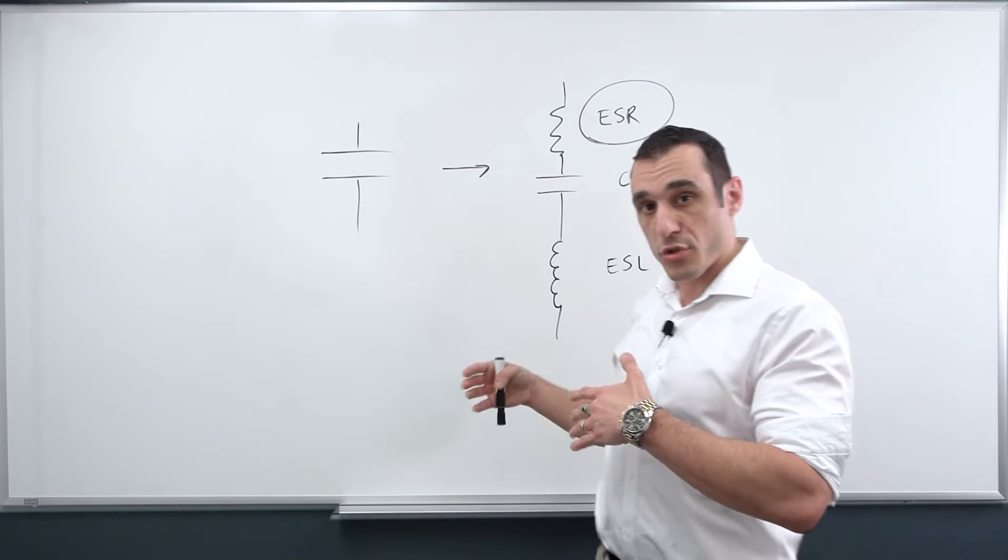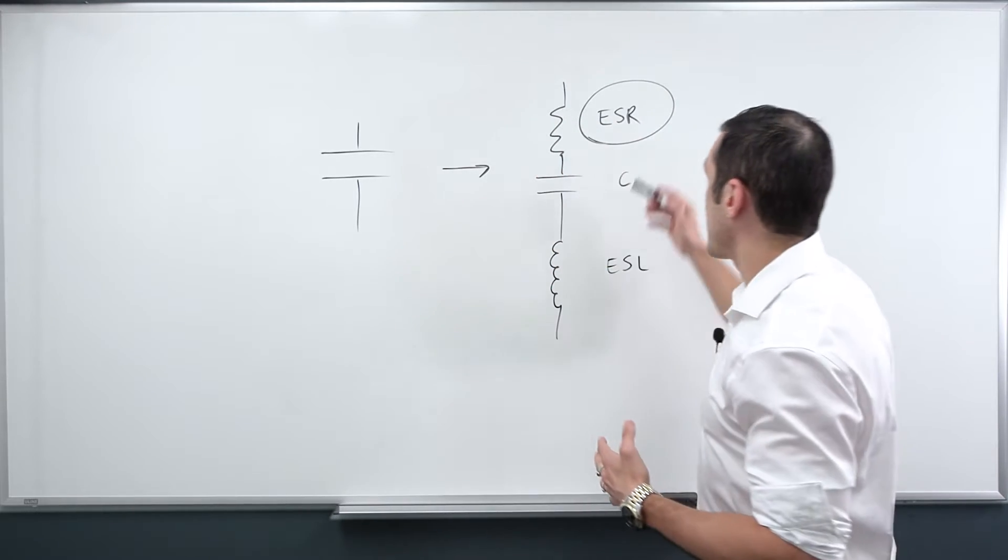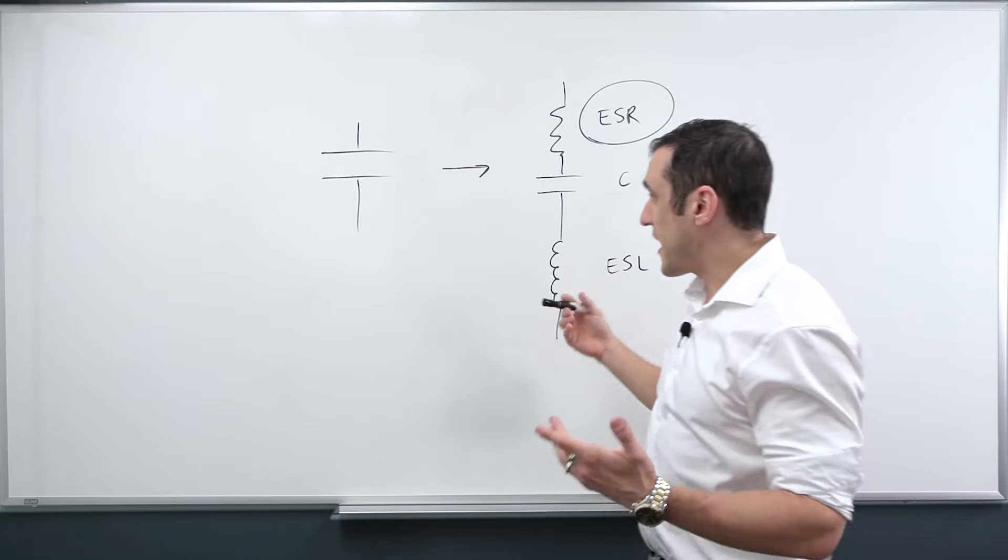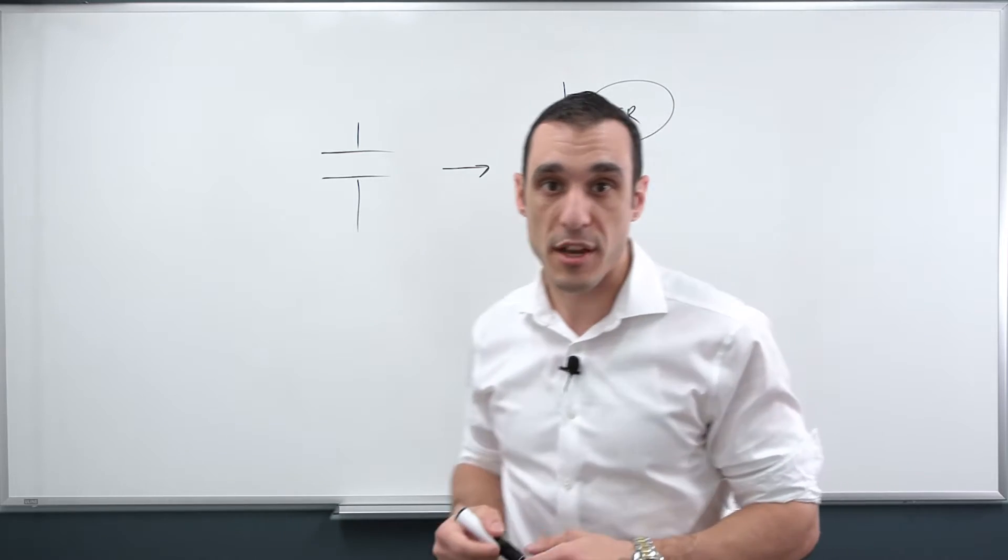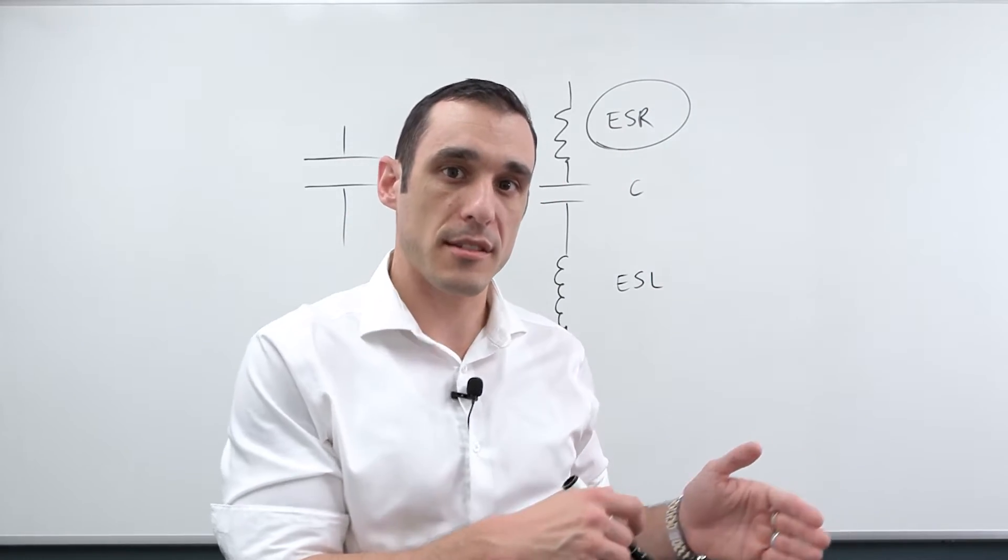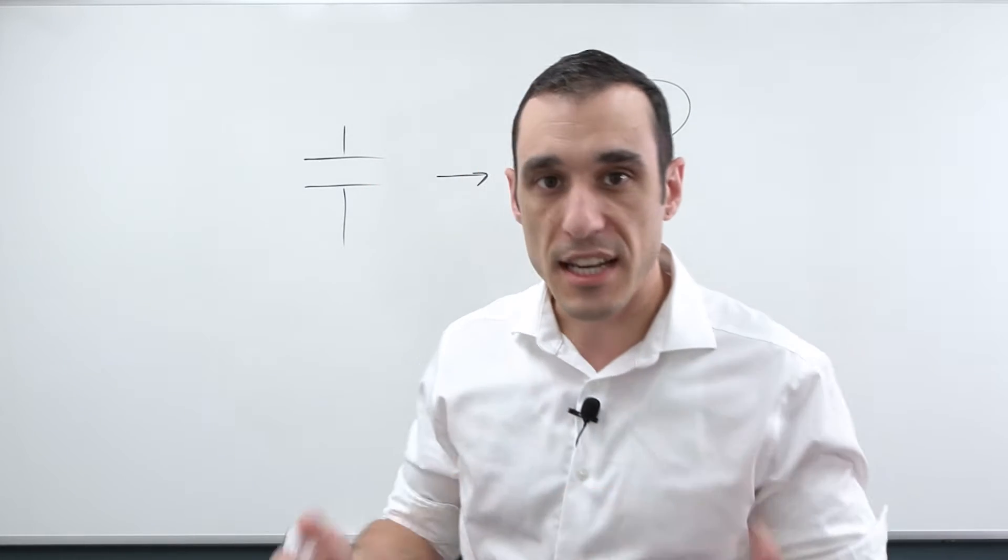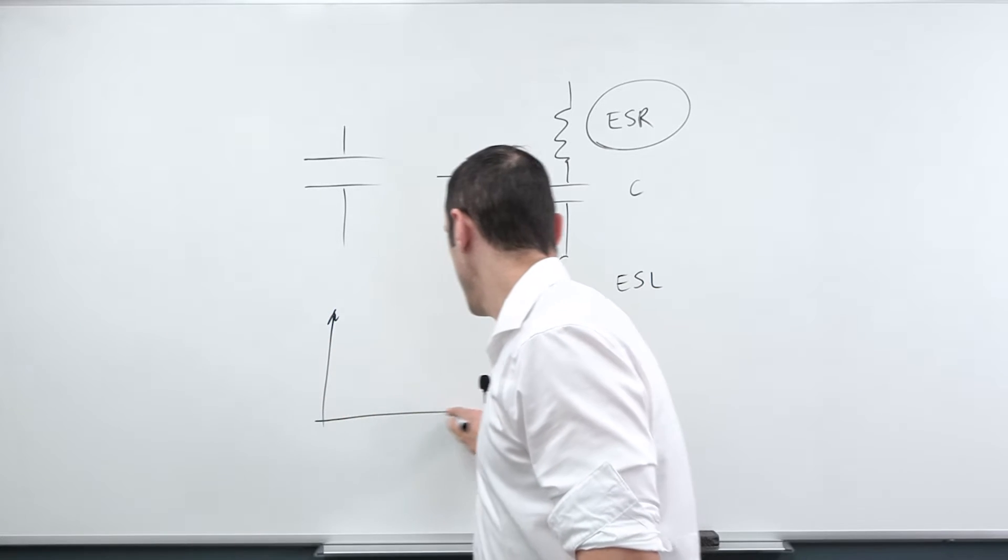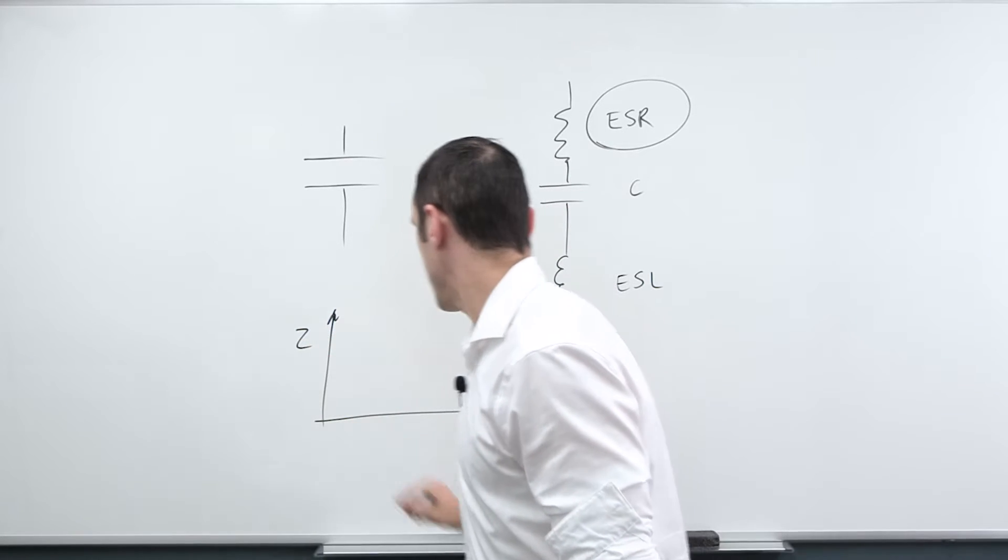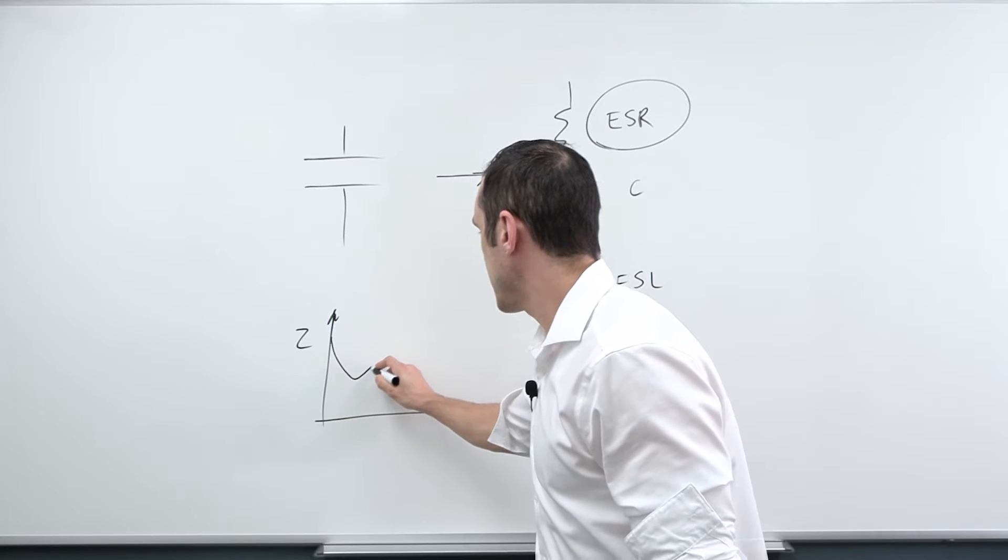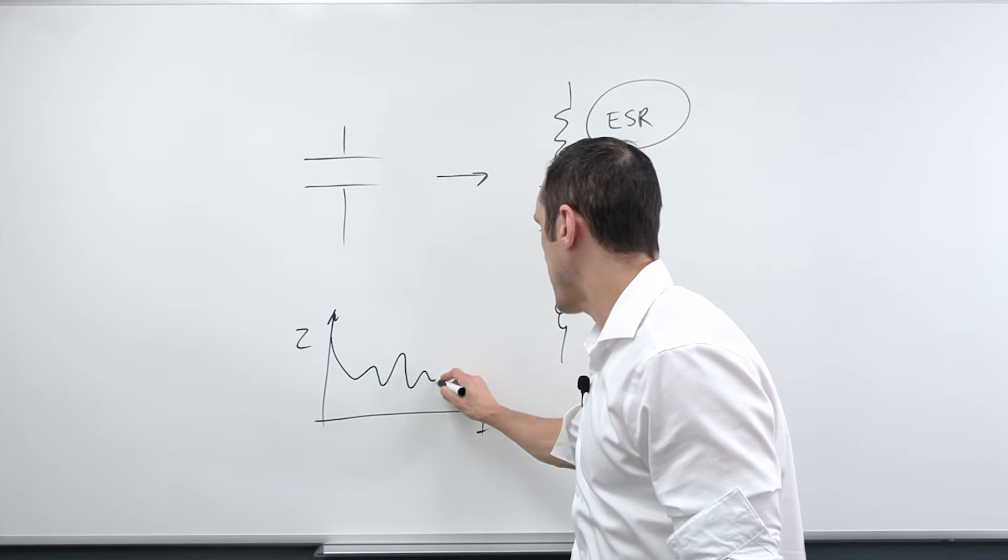What this question really relates to is how does a higher ESR value or a slightly higher effective series resistance affect your PDN impedance spectrum. So if you watch the previous video on transient responses in a PDN and the PDN impedance, you'll know that if I have a PDN impedance spectrum, this is my Z for impedance, this is frequency, it tends to look something like this and it has these spikes in it.